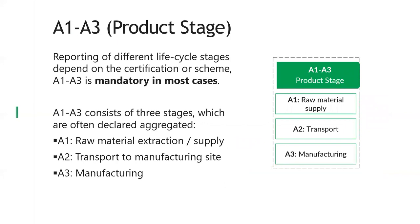Looking more into the different types of lifecycle stages, A1 to A3 is the product stage and is pretty much mandatory in all cases — any type of assessment you're trying to do will have A1 to A3 data, whether it's LEED, any national scheme, or product LCA. A1 to A3 always consists of three stages which are often reported aggregated: raw material extraction and supply, transportation, and manufacturing. In product LCA they're not aggregated — they're always separate. But from a building LCA point of view, they are aggregated and always recorded together.